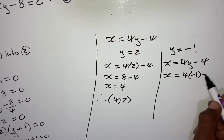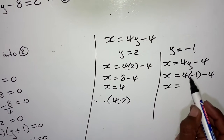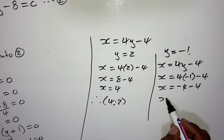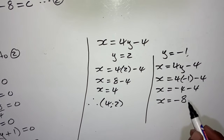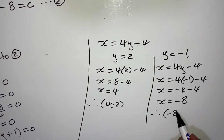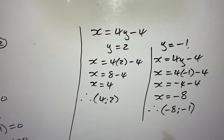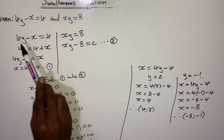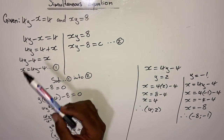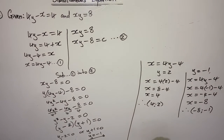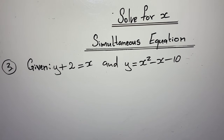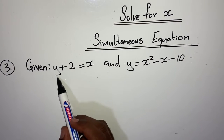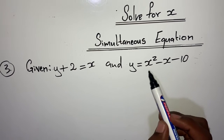Now find the signs. The sign of the constant is negative, so from the product rule, the brackets have different signs. The bigger factor — which is 4 — must take the sign of the middle term. My middle term is positive, so 4 takes a positive sign and the other bracket has a negative. This gives: (y + 4)(y - 2) = 0.